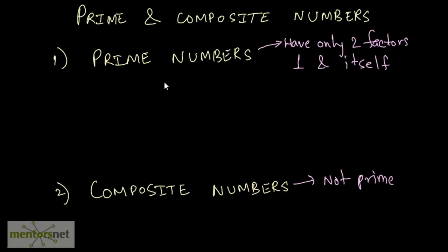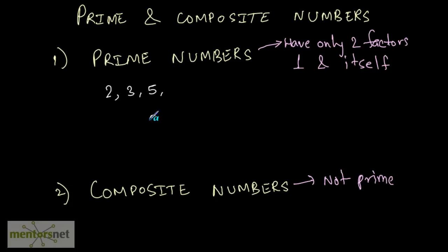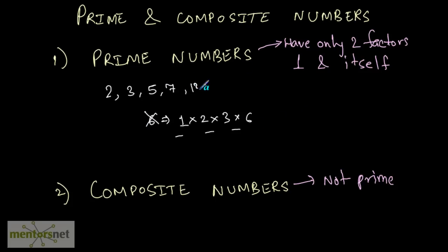Coming back to the definition of prime numbers: a prime number is the number which has only two factors — the number 1 and the number itself. So, 2 is a prime number because 2 has only two factors: 1 and 2. 3 is a prime number. 5 is a prime number. 6 is not a prime number because 6 has more than two factors — 1, 2, 3 and 6, giving 6 four factors. So 6 is not a prime number. 7 is a prime number. 13 is a prime number, and so on. You can calculate a lot of prime numbers.